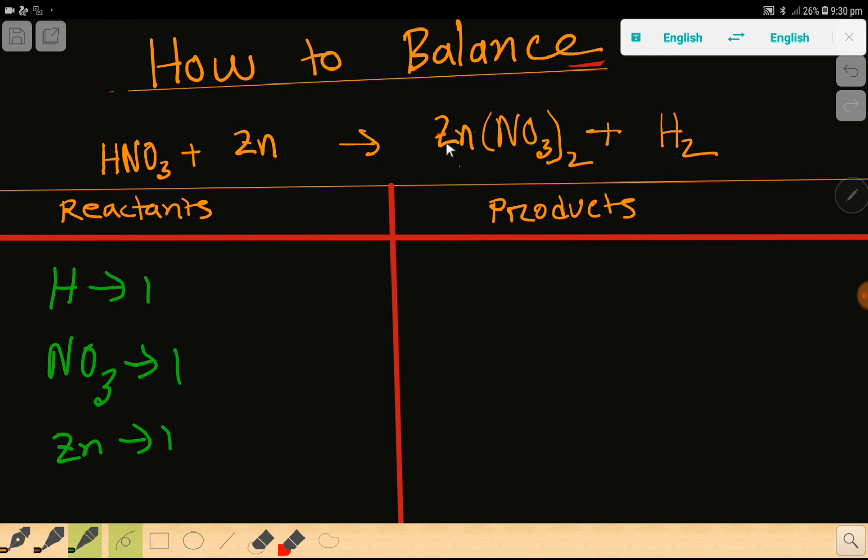Then we have to consider zinc, which is one. In the right-hand side, we have zinc which is one, then here we have nitrate polyatomic ion which is two, then we have hydrogen which is two.